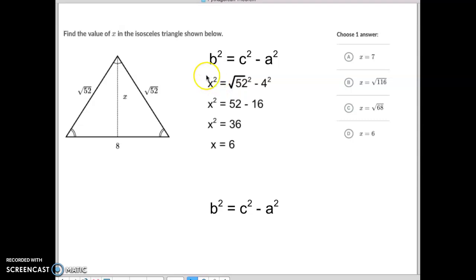Okay. So, on this one, we simply take your x squared will equal your square root of 52 squared minus 4 squared. And remember, if you don't know where I got 4 squared from, it's half of this distance right here. If the whole distance was 8, half of it's 4.